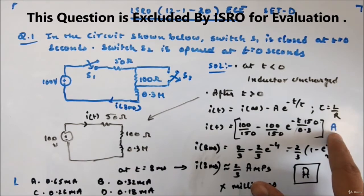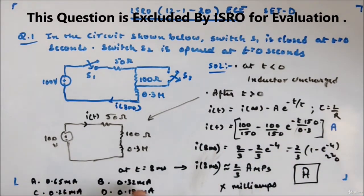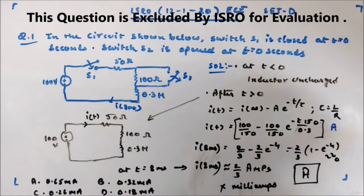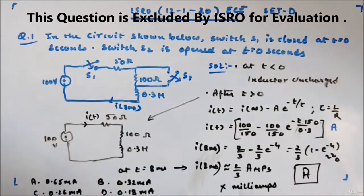Mind you, the current will be in ampere, but in options it is given in milliampere. It is given in milliampere, so that is some mistake, I believe, by ISRO.